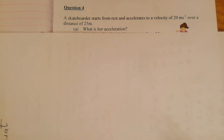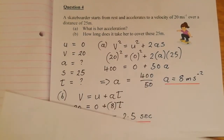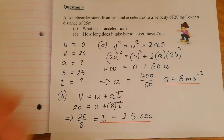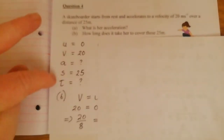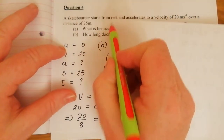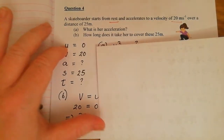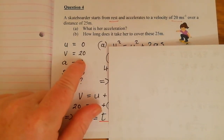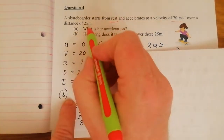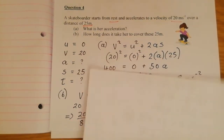Question four: a skateboarder starts from rest and accelerates to a velocity of 20 metres per second over a distance of 25 metres. What is her acceleration and how long does it take? Again, I write down u, v, a, s, t. She starts from rest so u is zero, final speed v is 20 metres per second, distance s is 25 metres. We're looking for acceleration a and time t.